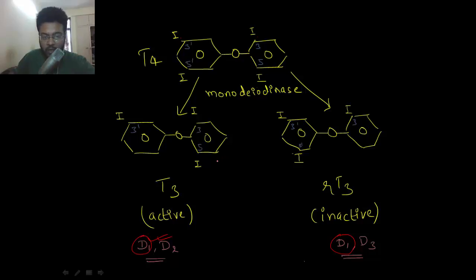If it is D2 monodeiodinase, it can only remove iodine from one ring and can only form the active form of the thyroid hormone, that is T3. So D2 can only form T3. If it is D3 monodeiodinase, it can remove iodine from the 5 position only—that means it can convert T4 into reverse T3 only.